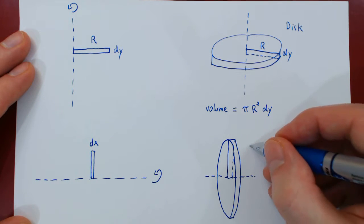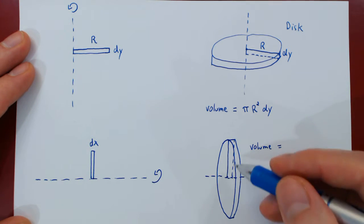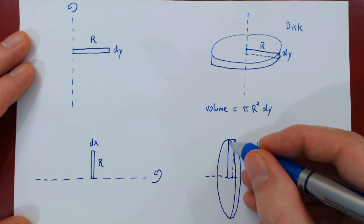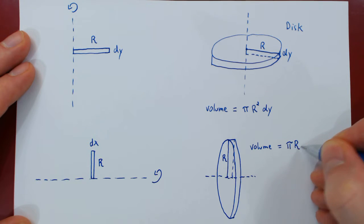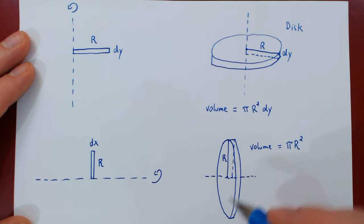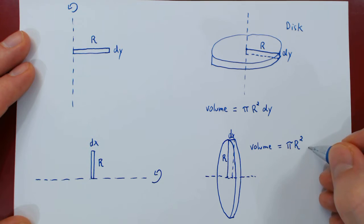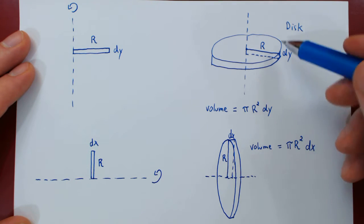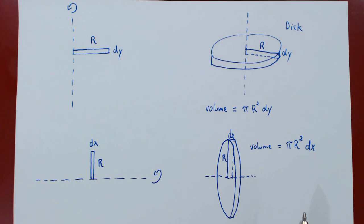The volume of our disk is given by the area of the circle, where the radius is the length of the rectangle — so pi r squared — times the thickness of the disk, which is the width of the rectangle dx. This is how you obtain the volume of a small disk generated by revolving a rectangle that is perpendicular to and touches an axis of revolution. And that's it. Thank you.